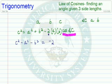And then on the other side I have negative 2ab times cosine of angle C. And again, we're just rewriting this formula.